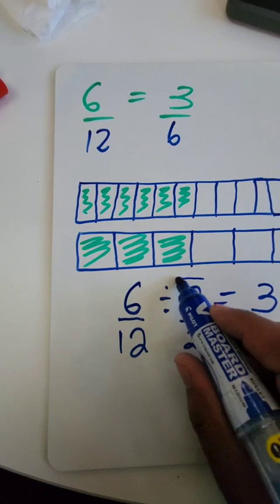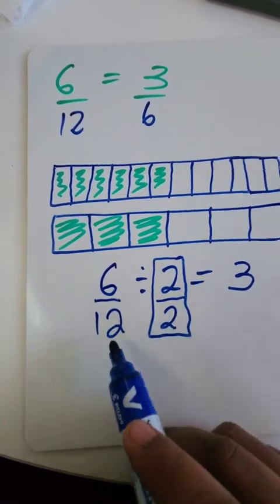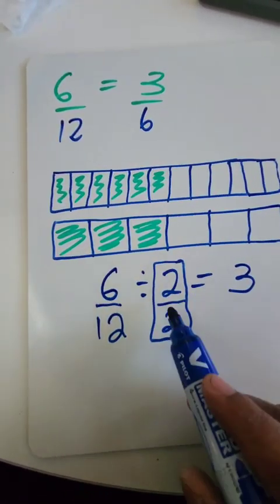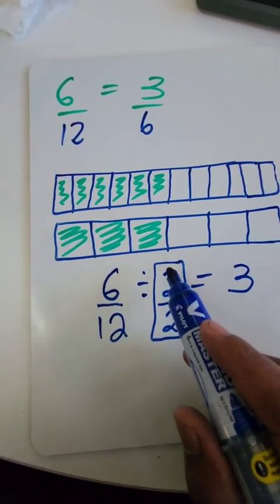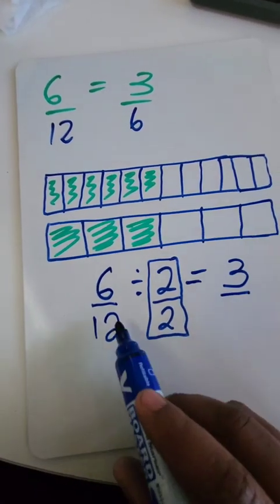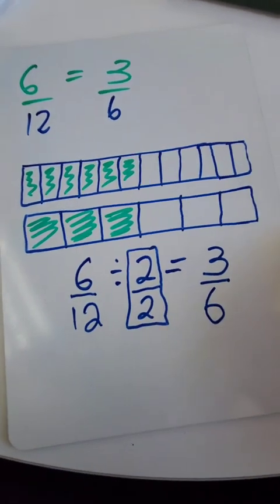So, this is our whole. Whenever we divide or multiply a fraction by a whole, then we will get its equivalence. So, 12 divided by 2 gives us 6.